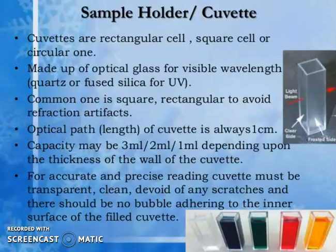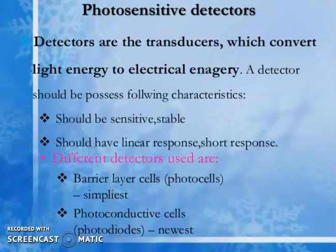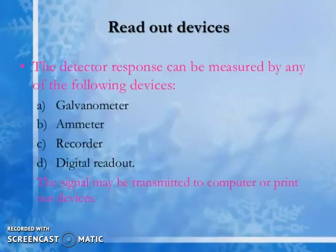Photosensitive detectors are transducers that convert light energy to electrical energy. A detector should be sensitive, stable, and have a linear response. Different detectors used include barrier layer cells, photo cells, and photoconductive cell photodiodes. The readout device measures the detector response using a galvanometer, ammeter, recorder, or digital readout; the signal may also be transmitted to a computer or printout device.